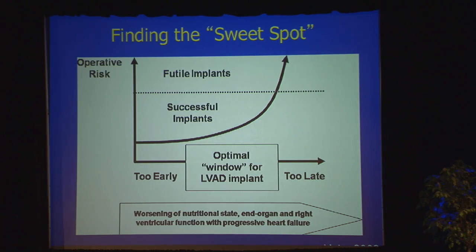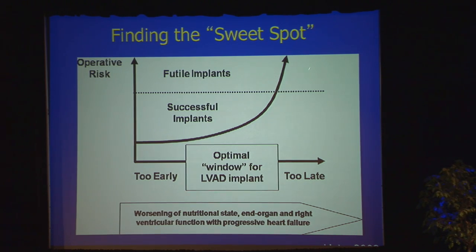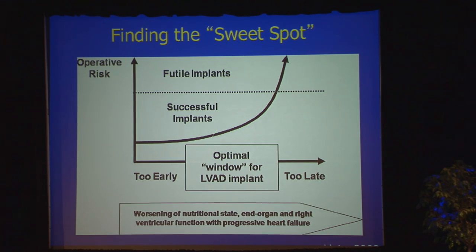That's why it's so important to identify patients with those simple clinical clues before they progress to INTERMACS 1 with an Impella or balloon pump — if we can get them a little earlier, the outcomes following LVAD will be much better. We want to find a sweet spot. You don't want to implant too early because you're exposing your patient to the risk of the LVAD without the benefit, but if you wait too late, the risk goes up and it becomes a futile implant. We want the Goldilocks — the optimum window for LVAD.